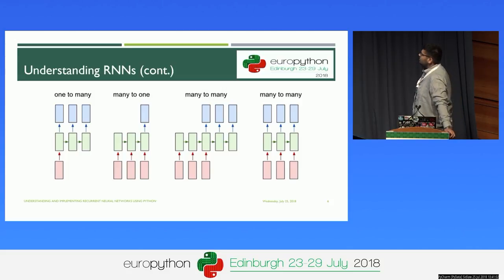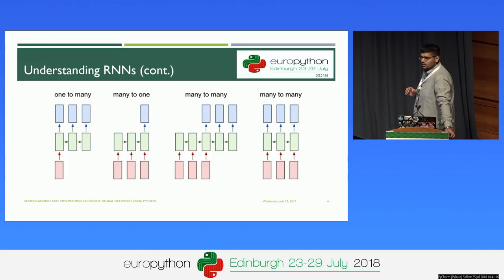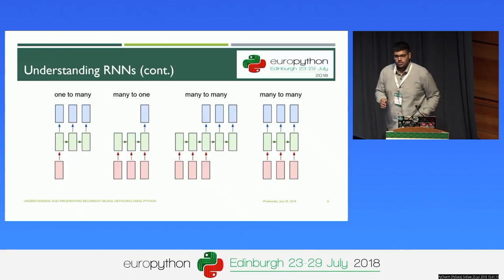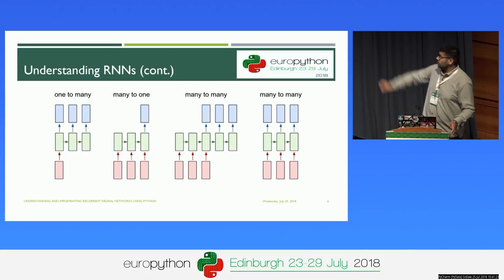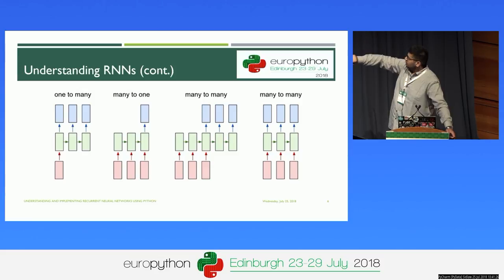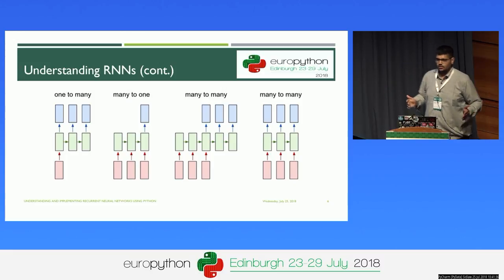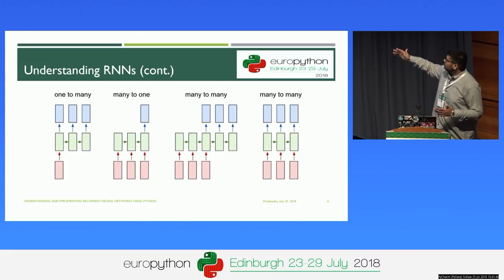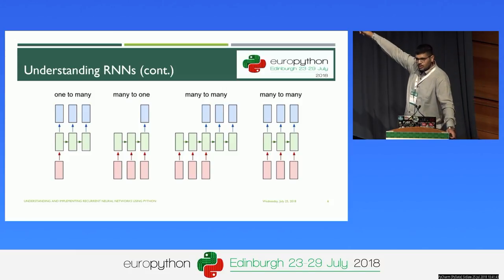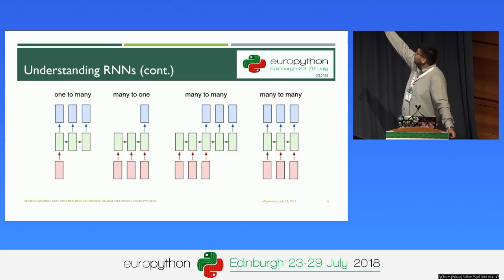RNNs can be of many architectures. The first is one-to-many, where you provide one input and get many outputs — for example, you provide an image and it generates a caption of five or six words. Likewise, we have many-to-one: for example, video frames mapped to a single output text. It can also be many-to-many, where from a video you generate a sentence.